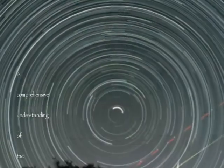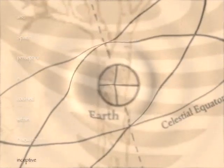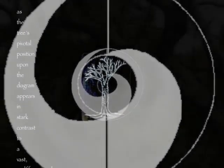A comprehensive understanding of the rudimentary axial and orbital interchange as it relates to our time-space perception is codified within Bagua Zhang's conceptive tree rotation diagram. As the tree's pivotal position appears in stark contrast to a vast, undifferentiated atmosphere to elemental landscape,